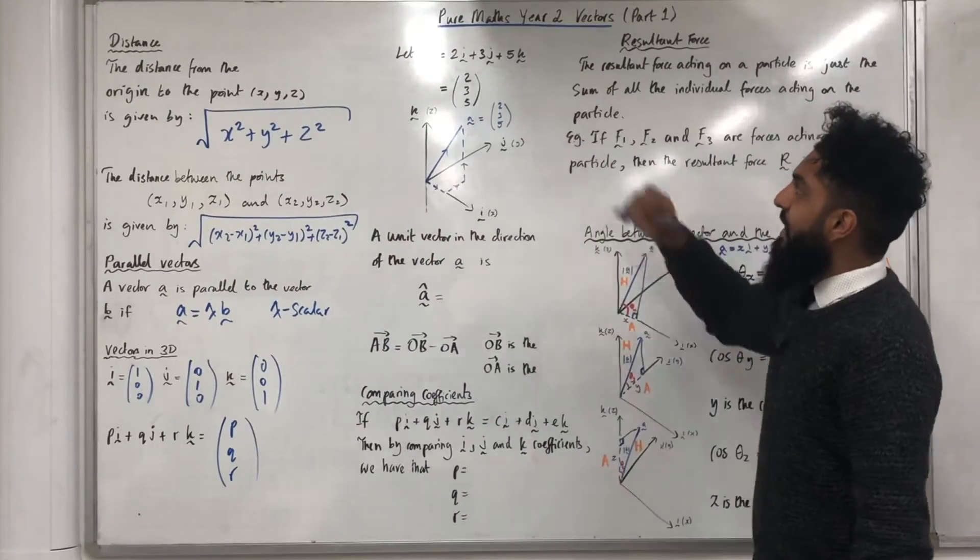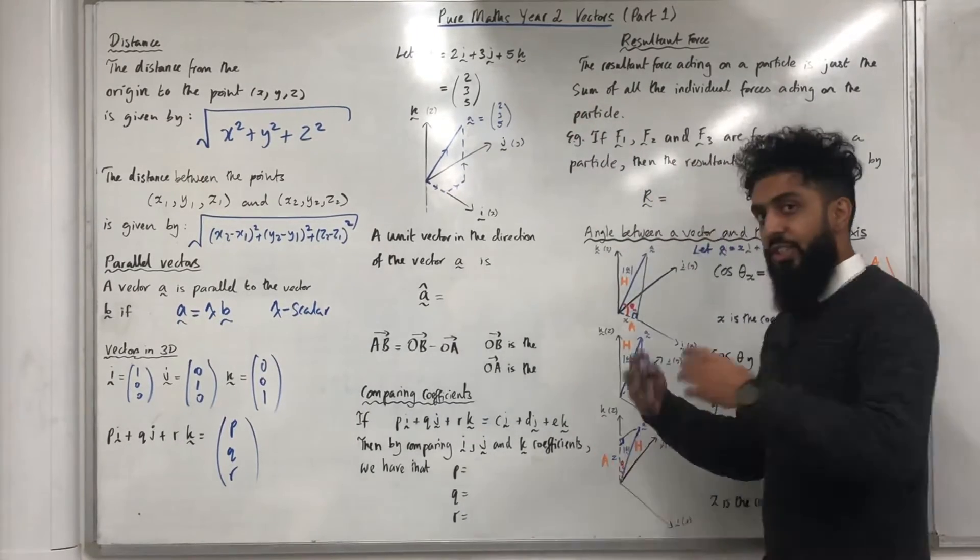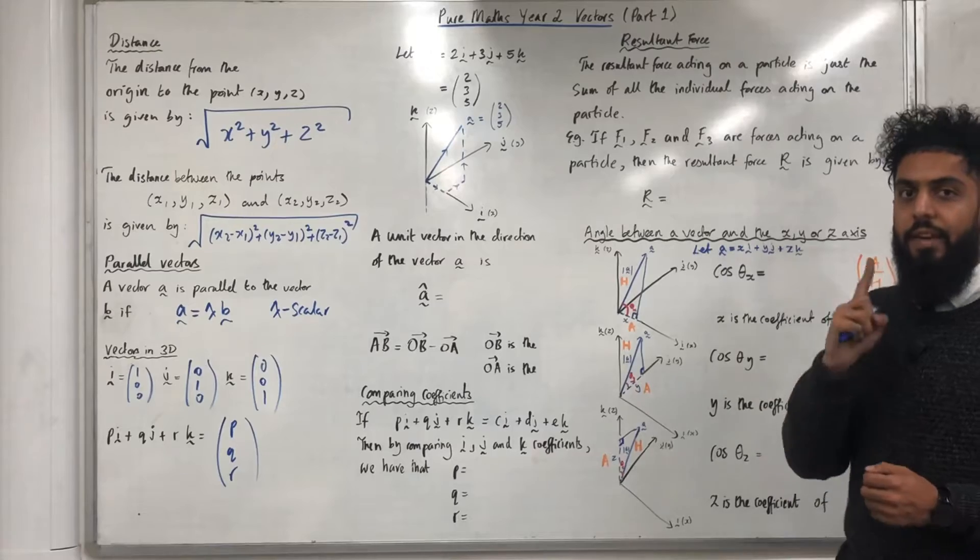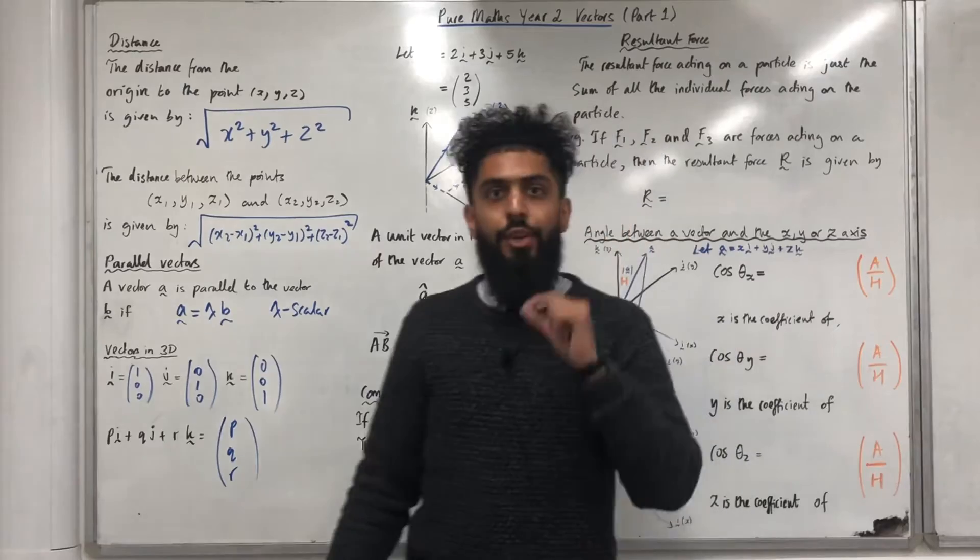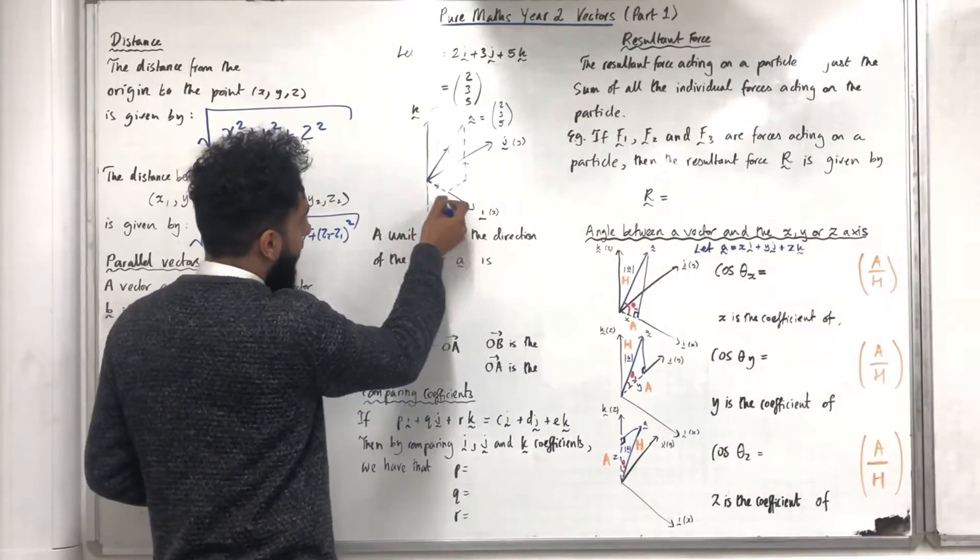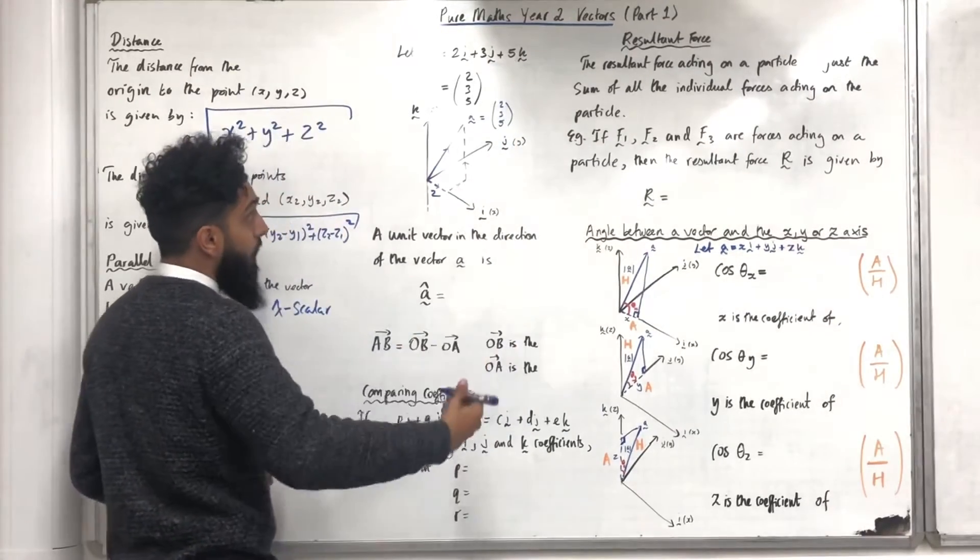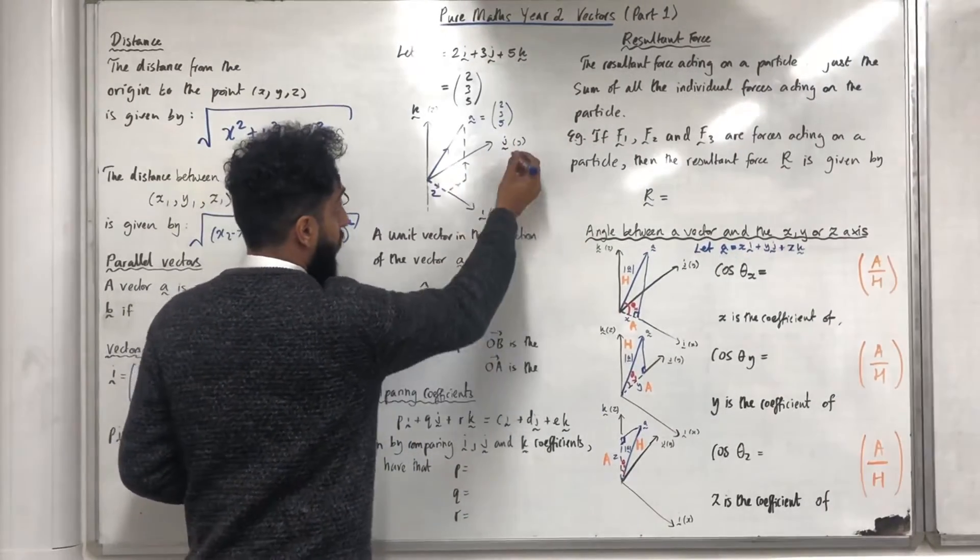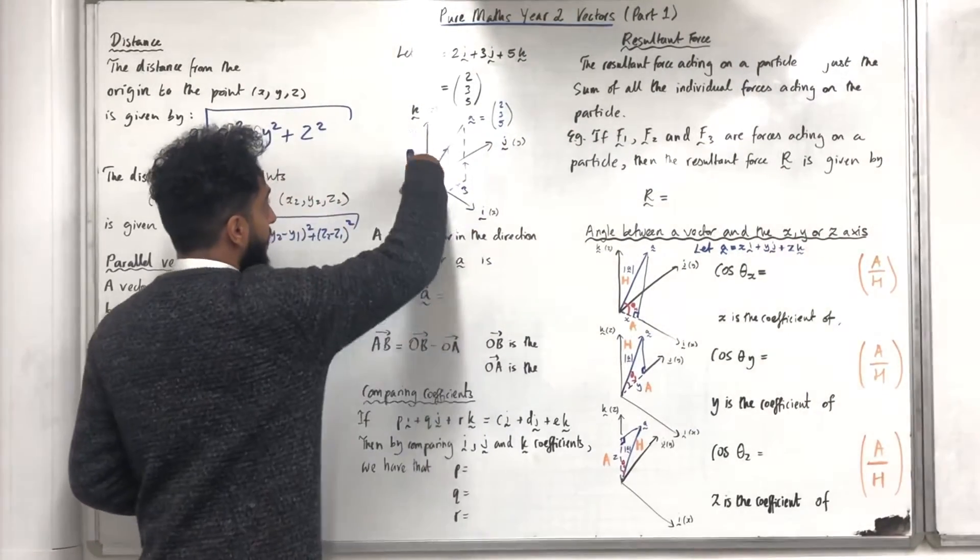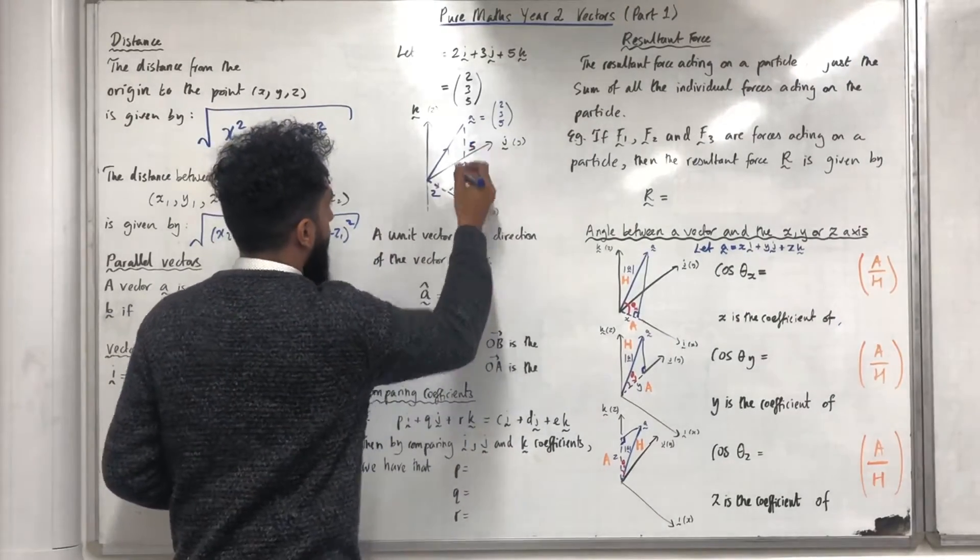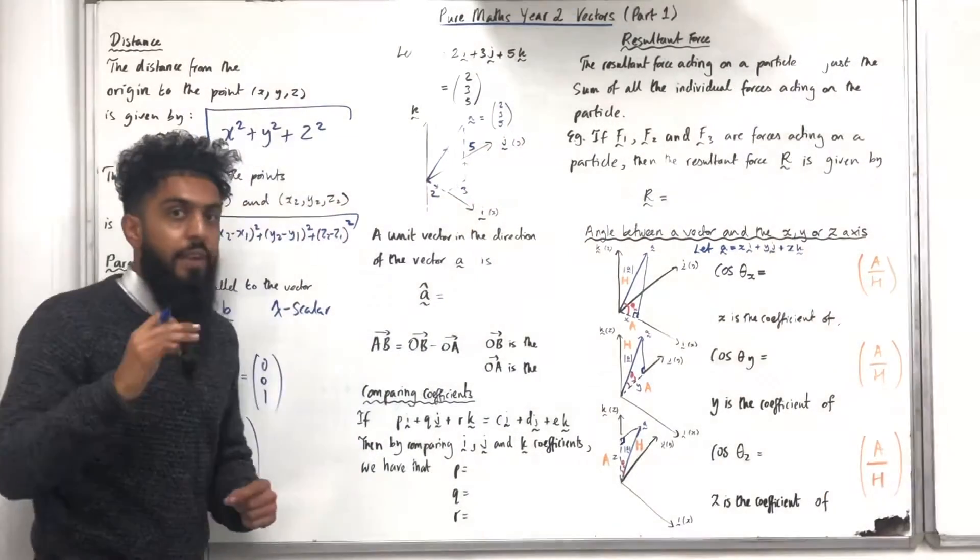Let a be the vector 2i plus 3j plus 5k as a column vector 2, 3, 5. I'm going to show you what this vector looks like in three dimensions. So here's a coordinate grid in three dimensions. The 2 is how much you move along the i-axis or x-axis. The 3 is how much you move along the j-axis or y-axis. The 5 is how much you move along the k-axis or z-axis. 2, 3, 5 form the vector a in three dimensions.